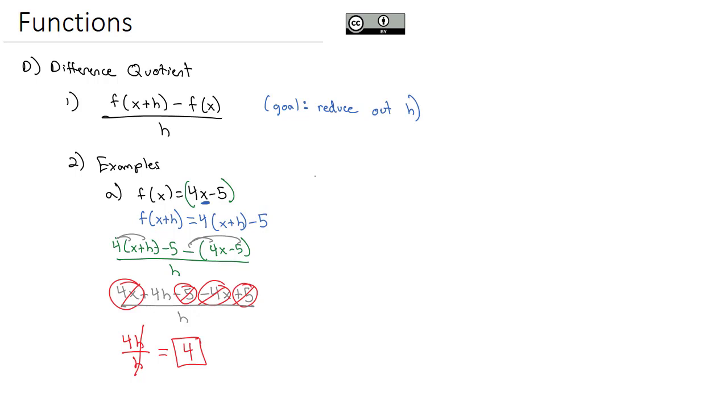That doesn't always happen, though. Let's try another example. Let's try the function f of x equals x squared minus 2x. Again, we'll first find what f of x plus h is, where I replace each of the x's with an x plus h. So we have x plus h squared minus 2 times x plus h.